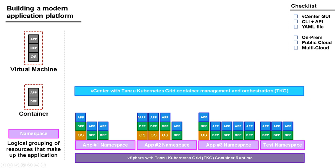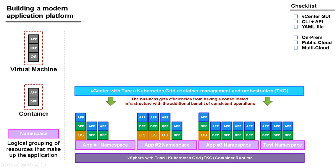We're going to manage this with vCenter, which now contains the ability to do containers and Kubernetes — vCenter with Tanzu Kubernetes Grid, also shortened as TKG. That allows us to consolidate all of that infrastructure: one set of infrastructure rather than multiple copies all over the place. We've also got the benefit of consistent operations because we're managing virtual machines and containers the same way, with the same set of tools, using things we're already familiar with. You can do all this through vCenter's GUI, but also from the command line, through an API, or through a YAML file — consolidated infrastructure with consistent operations.